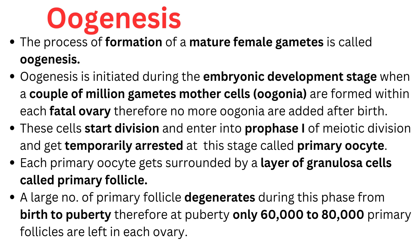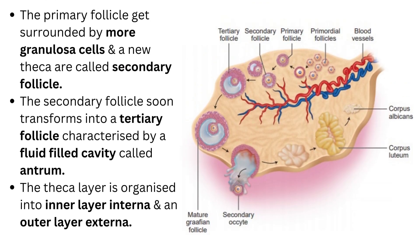These cells start division and enter into prophase 1 of meiotic division and get temporarily arrested at that stage, called the primary oocyte. At birth, the primary oocyte is surrounded by granulosa cells and is called the primary follicle. A large number of primary follicles degenerate during the phase from birth to puberty; thereafter, at puberty, only 60,000 to 80,000 primary follicles are left in the ovary. The primary follicle gets surrounded by more granulosa cells and a new theca, and is called the secondary follicle. The secondary follicle soon transforms into a tertiary follicle, characterized by a fluid-filled cavity called the antrum.